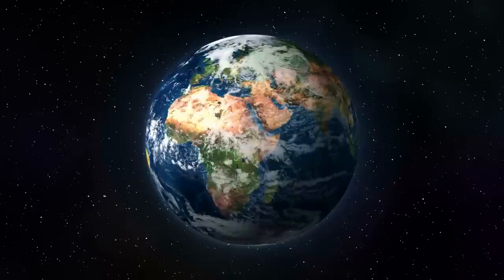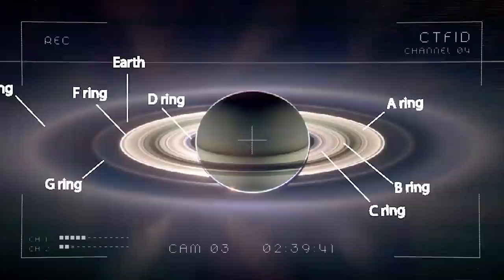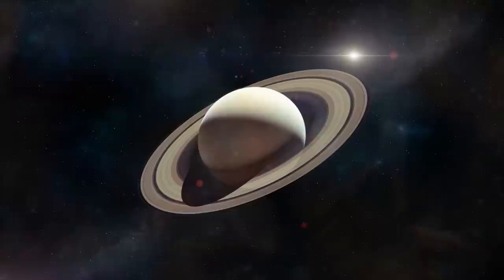Between the A and B rings lies the Cassini division, a 2,920-mile gap shown in the NIRCam image. The Encke gap in Saturn's A ring, also seen in the image, is where the moon Pan resides.